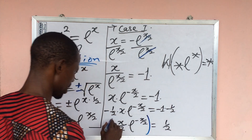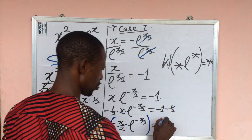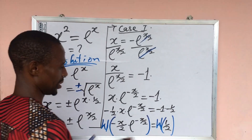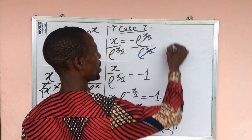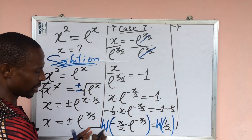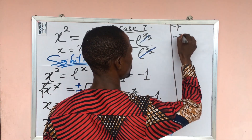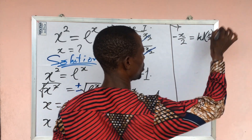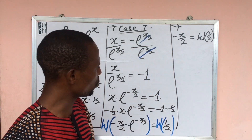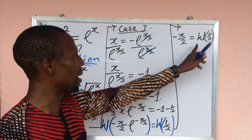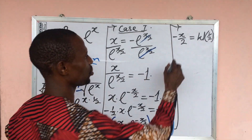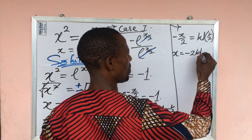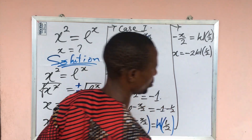Now we can apply the Lambert W function to both sides. Applying it, we get: negative x over 2 equals W of one-half. Multiplying both sides by negative two gives us x equals negative 2 times W of one-half.